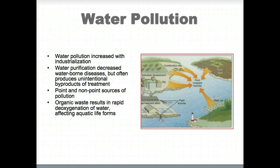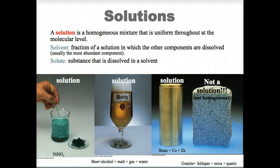Nitrate is easily converted to nitrite, which is carcinogenic. By adding industrially produced ammonia to the environment through the Haber process, the nitrogen cycle on Earth is impacted, and nitrogen has become a significant source of pollution.